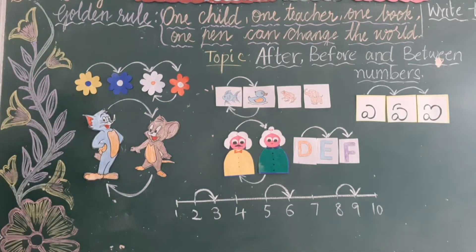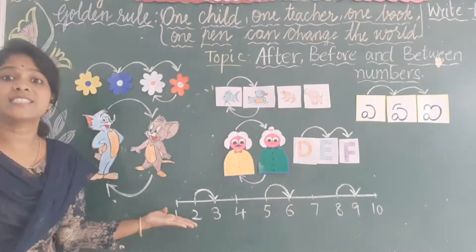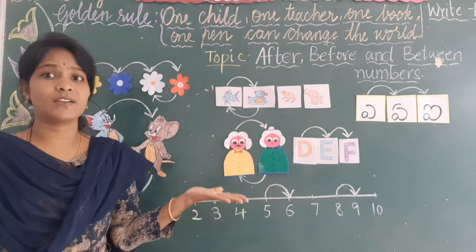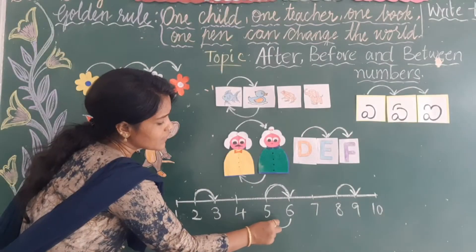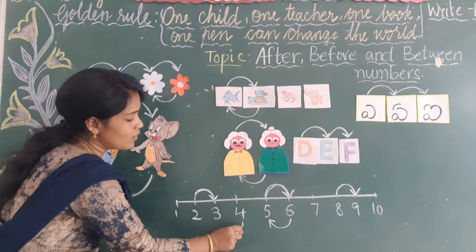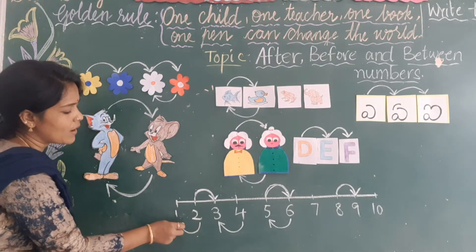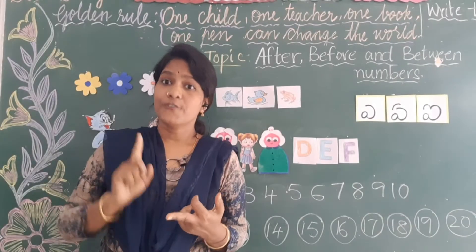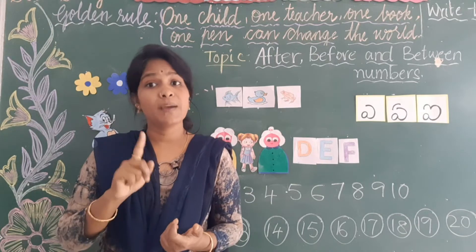Now look at the number line — we have 10 numbers, 1 to 10. We have learnt how to find out the after number on the number line. Now we have to learn how to find out the before number. See — after 5 you get 6. So before 6, which number do you get? 5. Before 6 you get number 5. Before 4, which number do you get? Number 3. Before 2, which number do you get? 1. Did you understand? We have learnt after numbers and before numbers. Now we will learn how to find out between numbers.